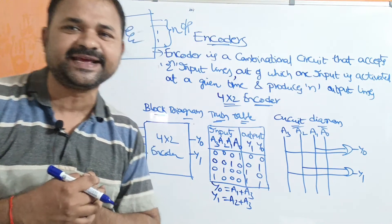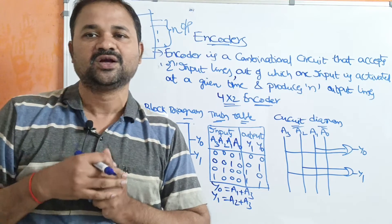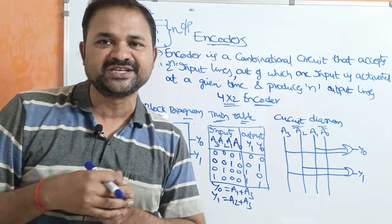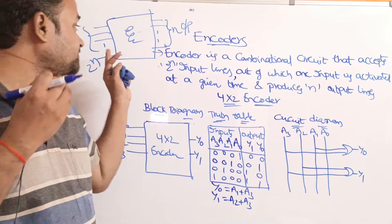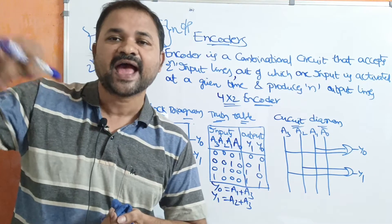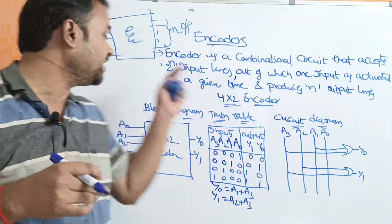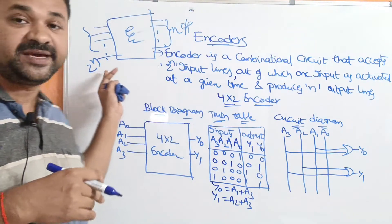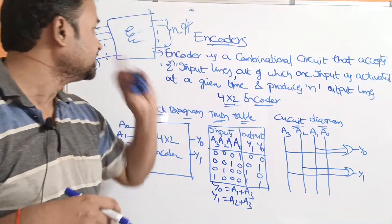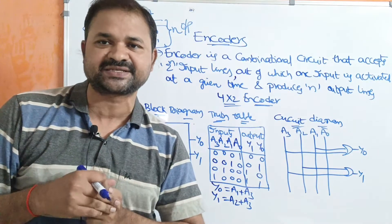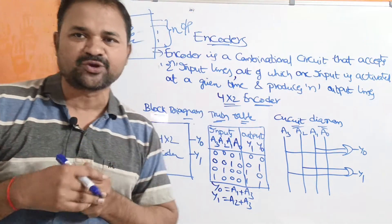Encoder is the reverse operation of the decoder. The decoder accepts n input lines and produces 2^n output lines, whereas the encoder accepts 2^n input lines and produces n output lines. Now let us discuss about the 4 by 2 encoder.